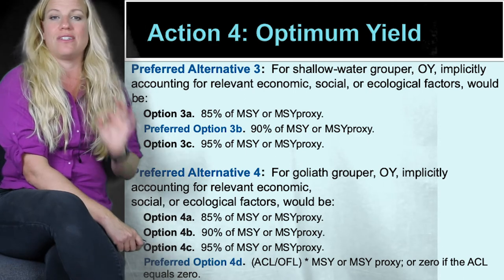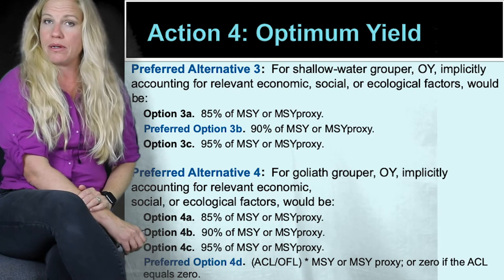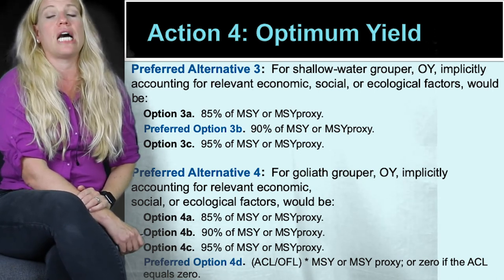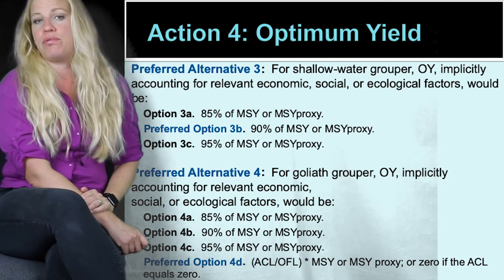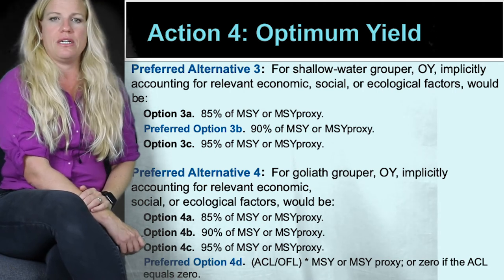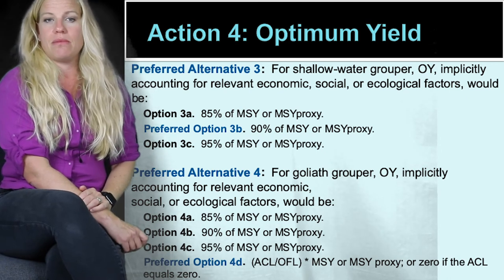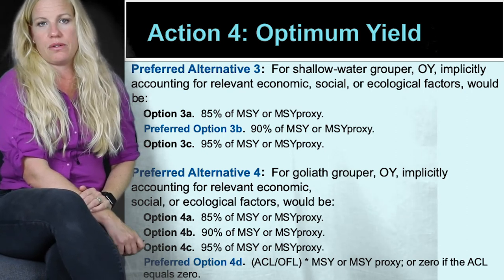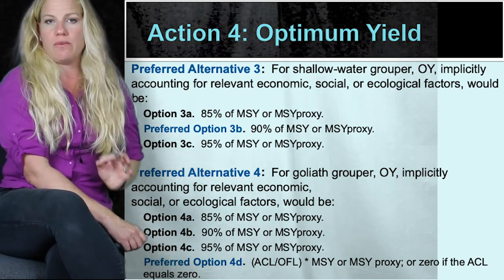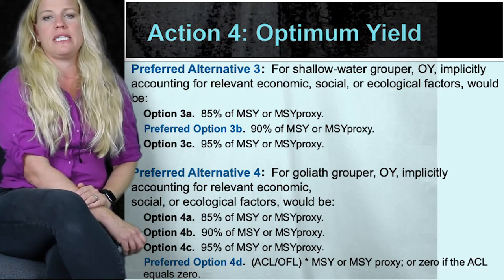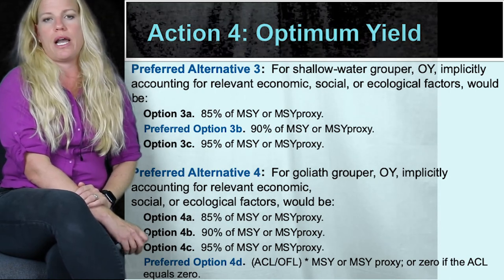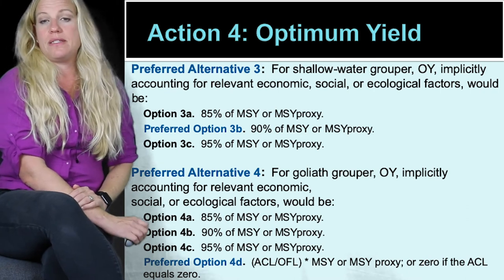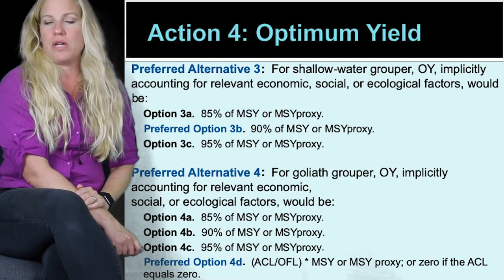Alternative three, also a preferred alternative, deals specifically with shallow water grouper and would set the optimum yield separately. Options include 3A at 85% of MSY, the preferred option 3B at 90% of MSY, or option 3C at 95% of MSY. Alternative four, also a preferred alternative, deals specifically with Goliath grouper. Sub-options include setting optimum yield at 85%, 90%, or 95% of MSY, or using the current preferred option that would set the optimum yield at zero since the annual catch limit is at zero.